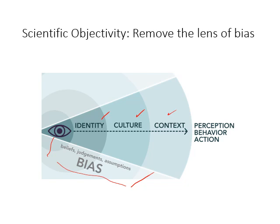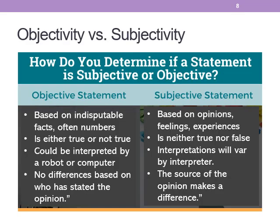As scientists, we try to step back by putting into place strict methods that allow us to observe things objectively, such that what I'm observing, if you were observing the same thing, you will see it the same way — none of my bias or your bias in the story. Then we went on and talked about how this was the difference between objectivity and subjectivity.